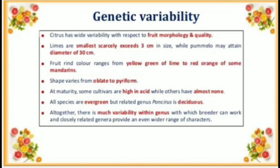Genetic Variability: Citrus has wide variability with respect to fruit morphology and quality. Limes are the smallest, scarcely exceeding 3 cm in size, while Pumelo may attain a diameter of 30 cm. Fruit rind color ranges from yellow-green of lime to red-orange of some mandarins. Shape varies from oblate to pyriform. At maturity, some cultivars are high in acid while others have almost none. All species are evergreen, but related genus Poncella is deciduous.